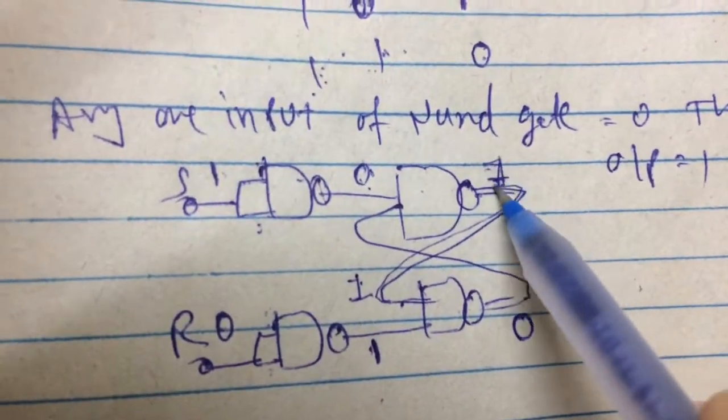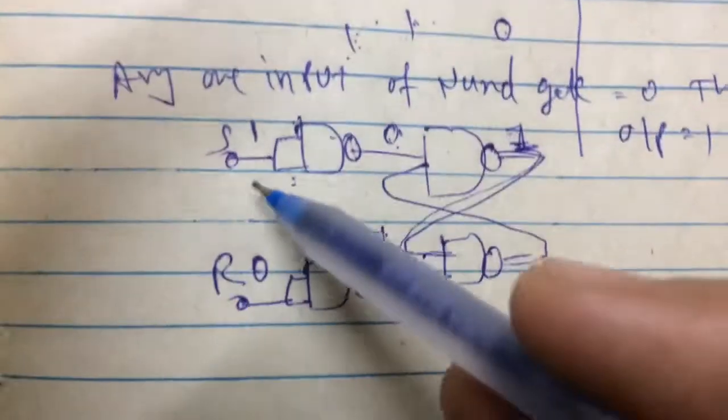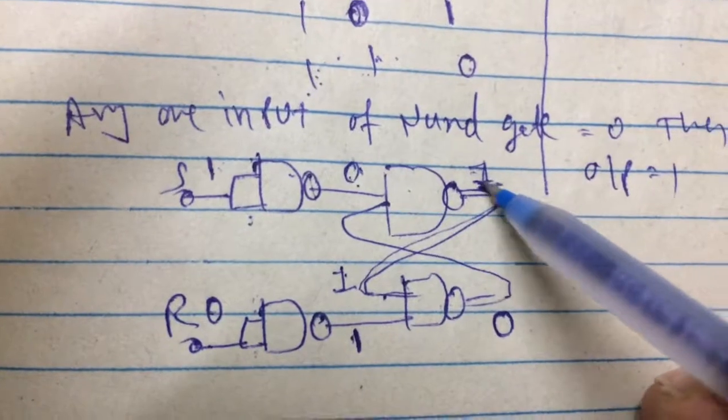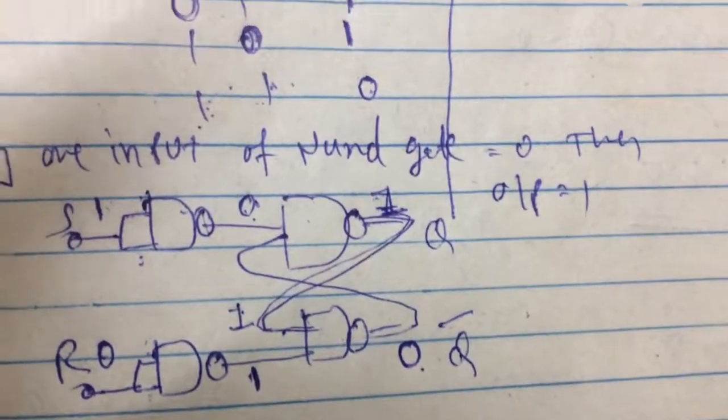So now again, just check your status. It is for 1 and 0 input. Here 1 and 0 and we can get result 1 and 0. 1 and 0, here nothing but Q and here nothing but Q bar. Thank you.